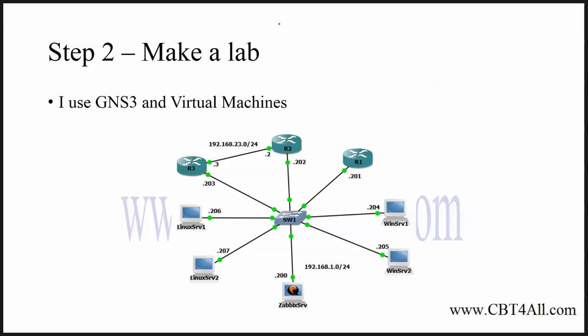You can see the IP addresses in my environment. In your laboratory, you can choose different IP addresses. All servers are in the range 192.168.1.x /24. The Zabbix server is 192.168.1.200, the Linux server is .207, and the router is .201. You can match these IP addresses to your own environment.